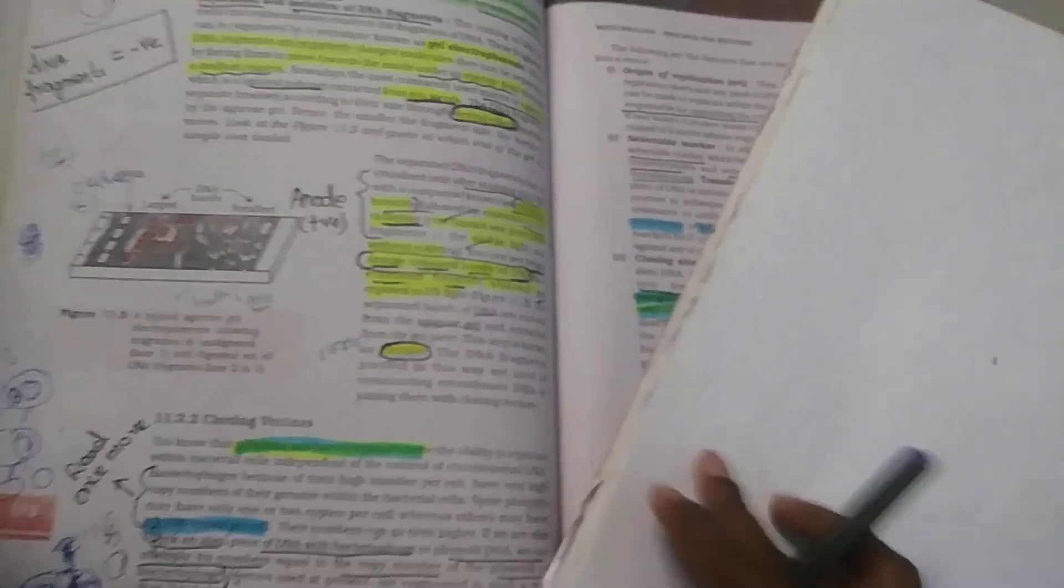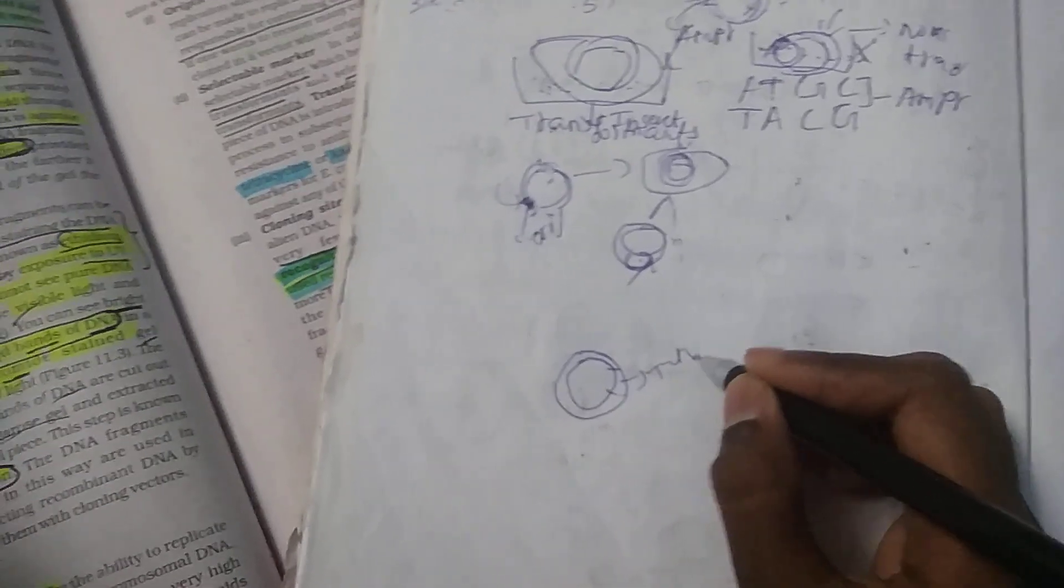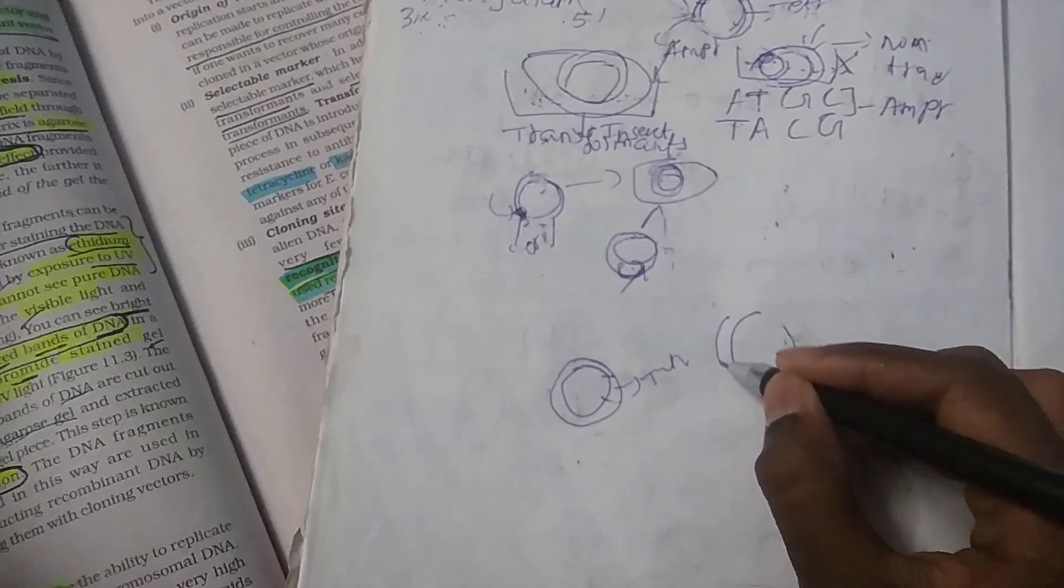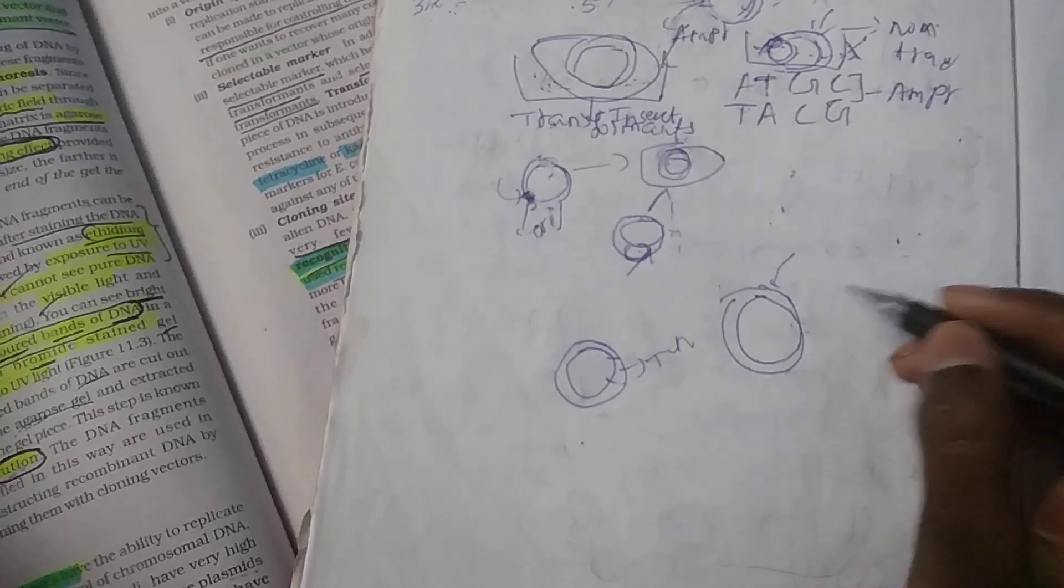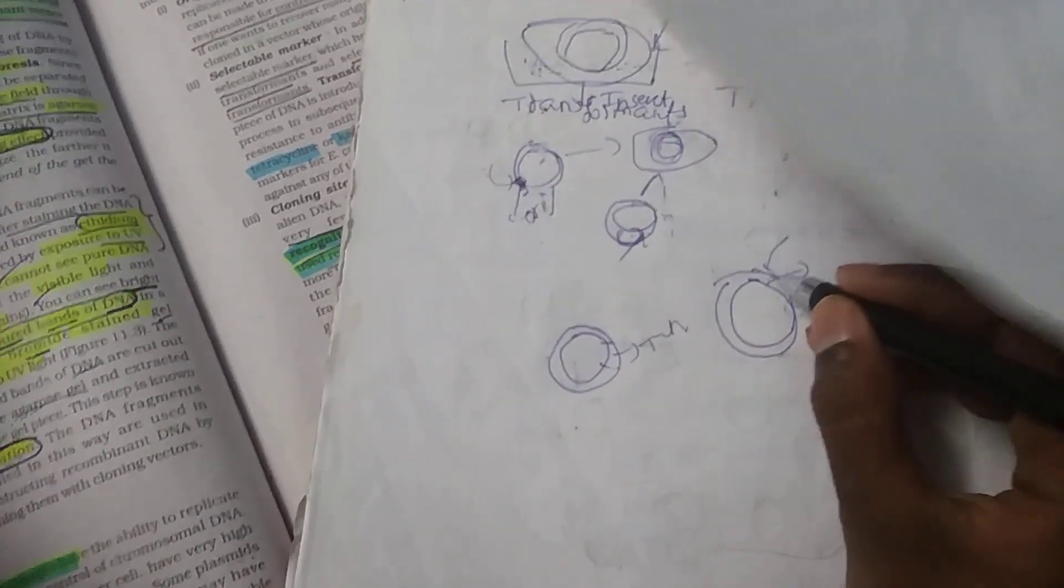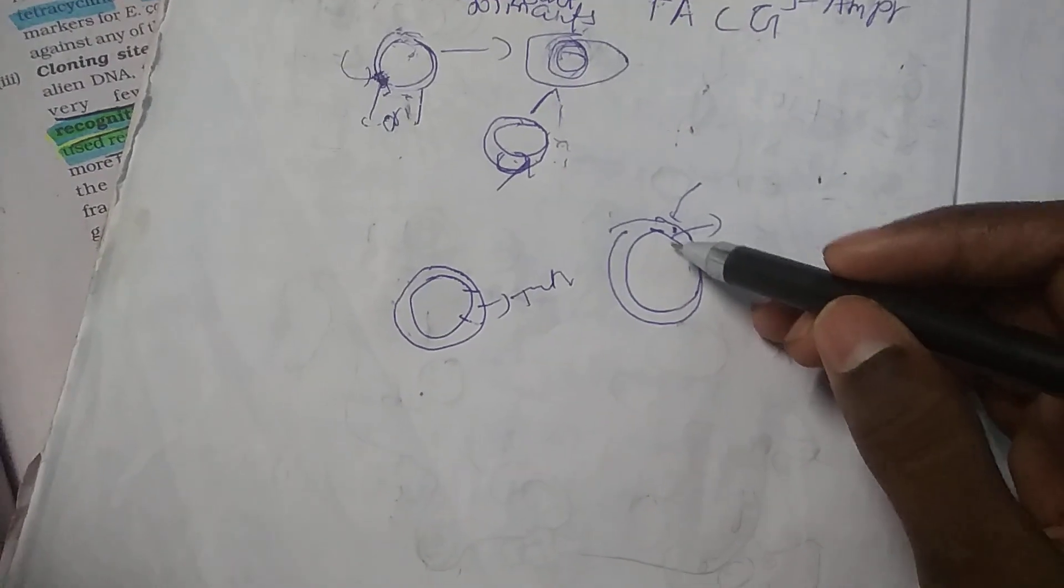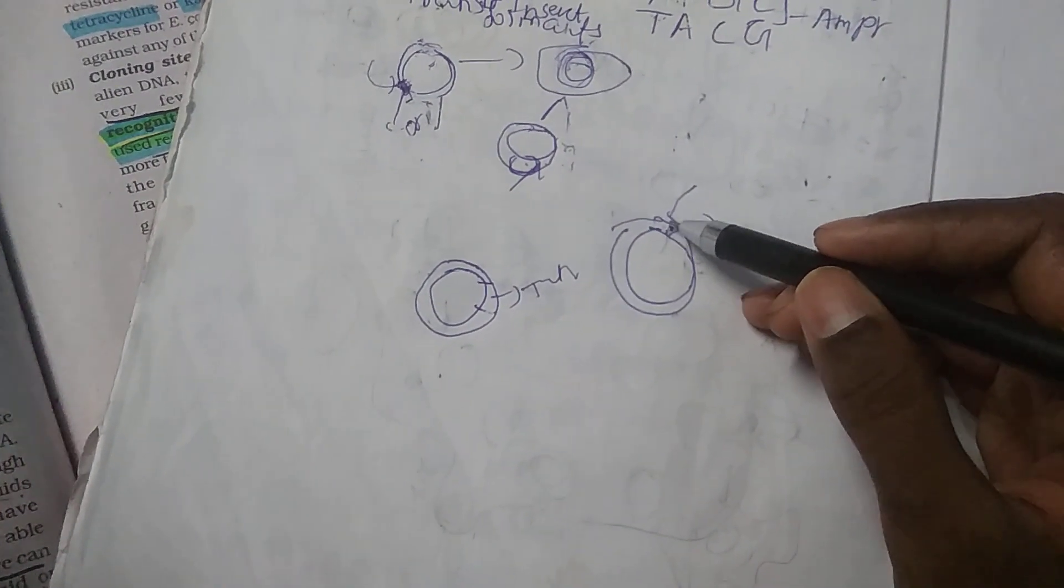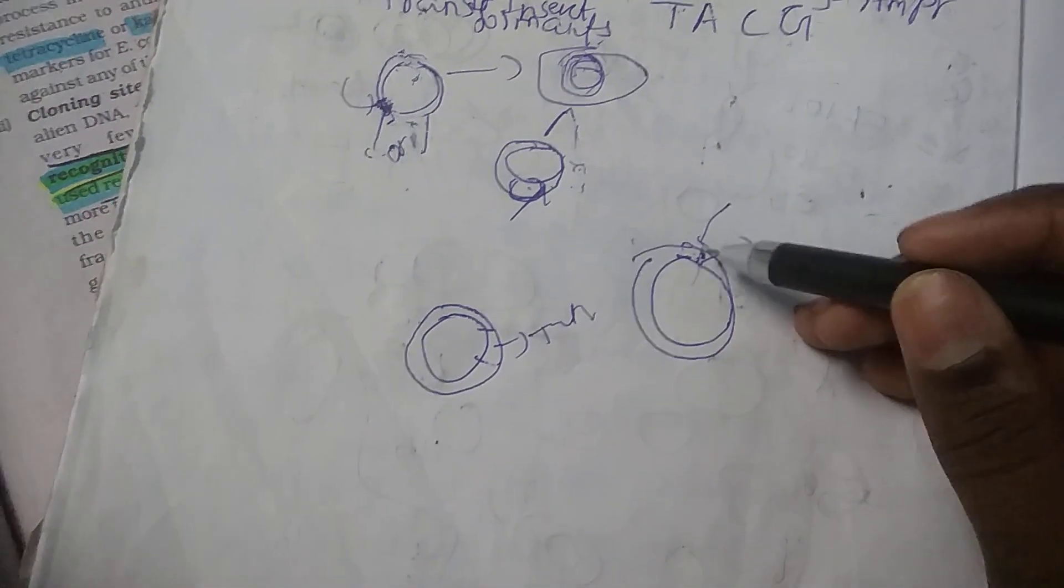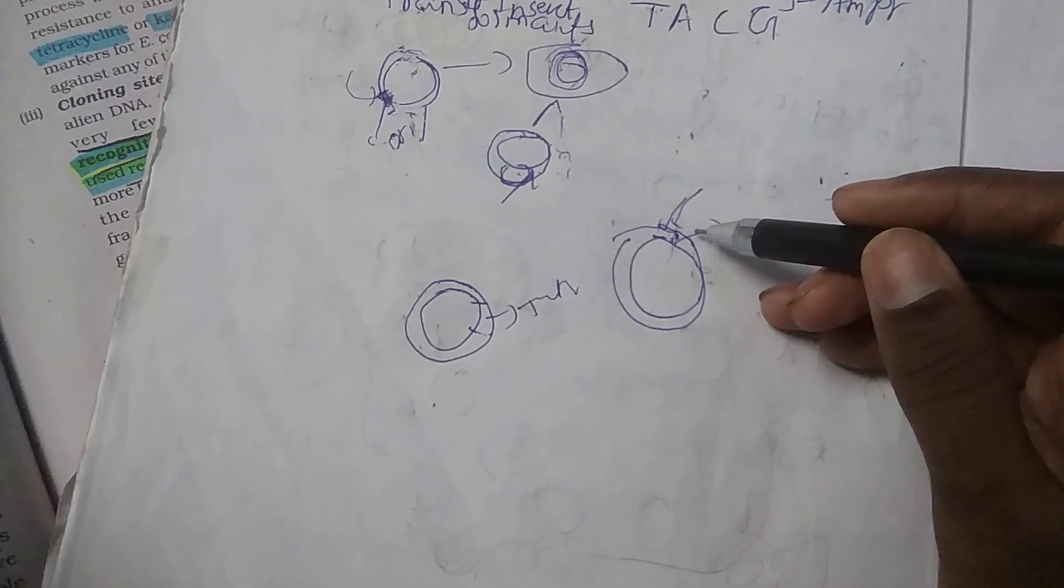Here is the DNA. Let's use the tetracycline recognition site. We are going to cut at the tetracycline gene. I have cut that and placed DNA as well.